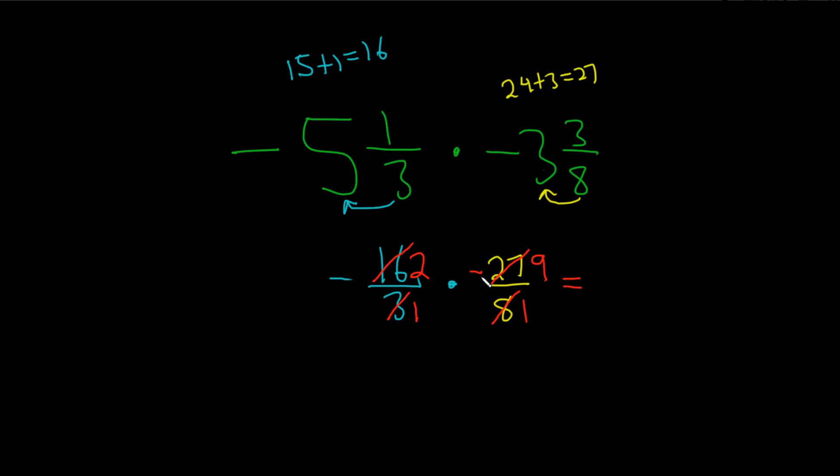So negative and negative is positive. So the answer is positive. Then multiply straight across. 2 times 9 is 18. Oh, look at this. 1 times 1 is equal to 1. We actually get a whole number. So 18 over 1, and that's equal to 18.